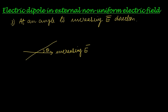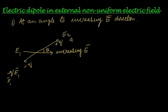Now the third case: the increasing electric field direction is given, and the dipole rests at an angle θ to it. At one end the electric field is less (E1), and at the other end it is more (E2), as suggested by the increasing electric field representation. Force on negative q: F1 = negative q·E1. Force on positive q: F2 = q·E2. Two unequal forces act at two opposite ends, and there is an angle between the dipole and the electric field direction.